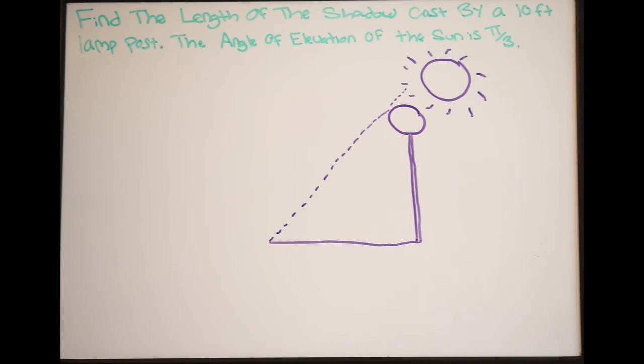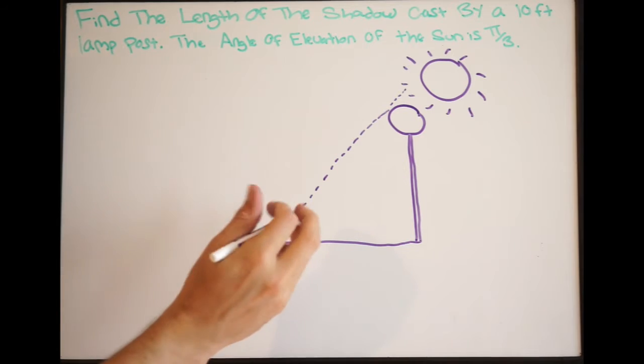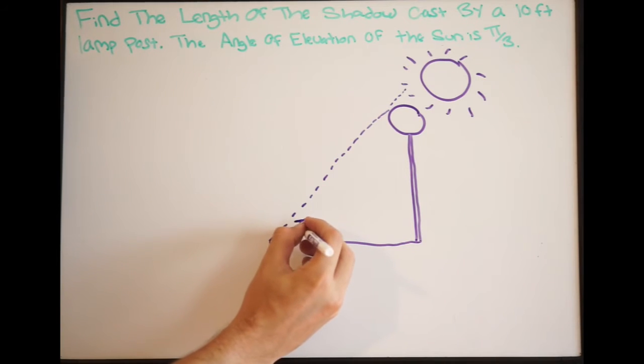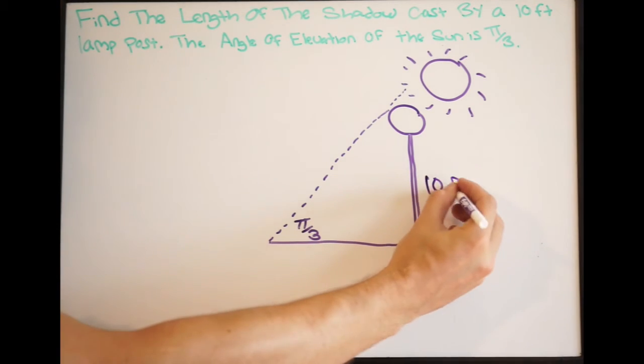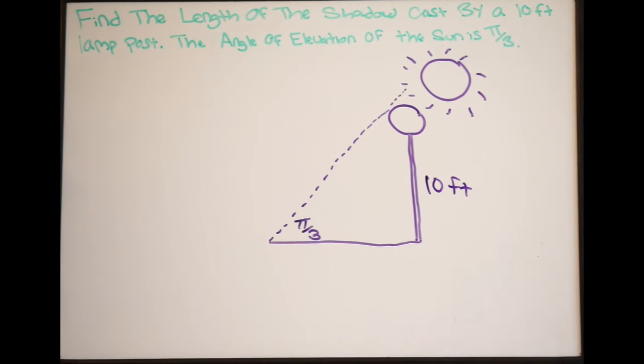So our angle of elevation of the sun is pi over 3. Again, that's given to us in radians. So this angle right here is going to be pi over 3. We know that our lamppost is 10 feet, so we can just write 10 feet here. And now we have to use our knowledge of trig functions to solve this problem.